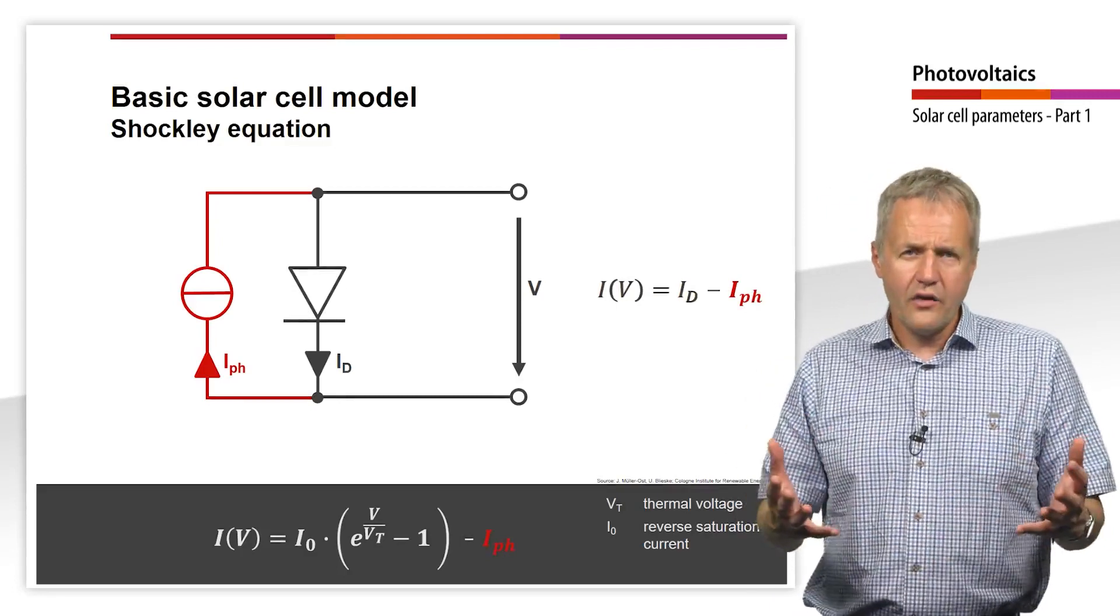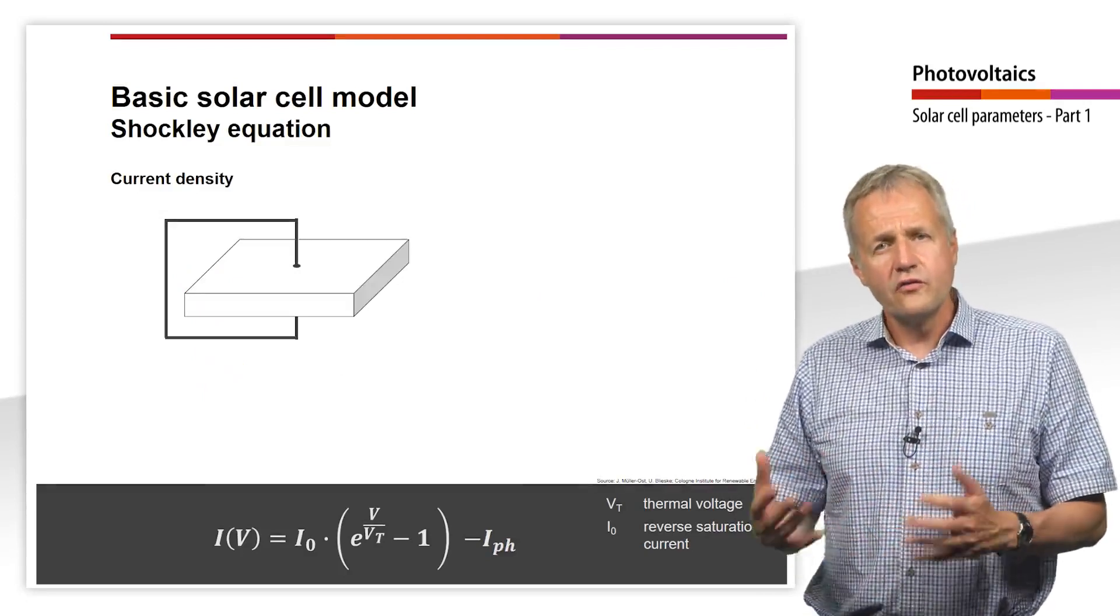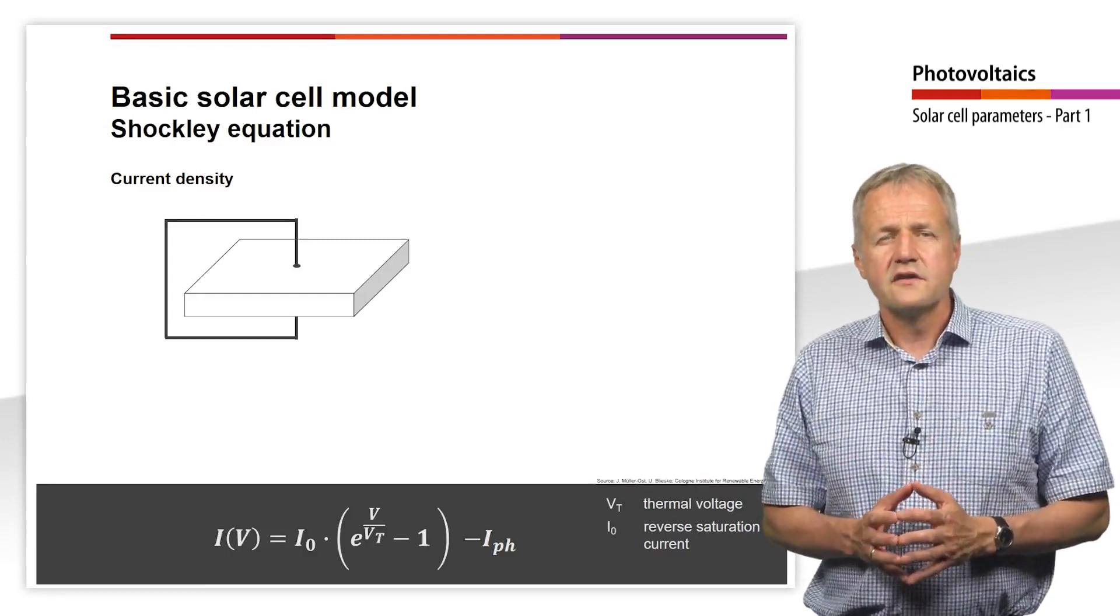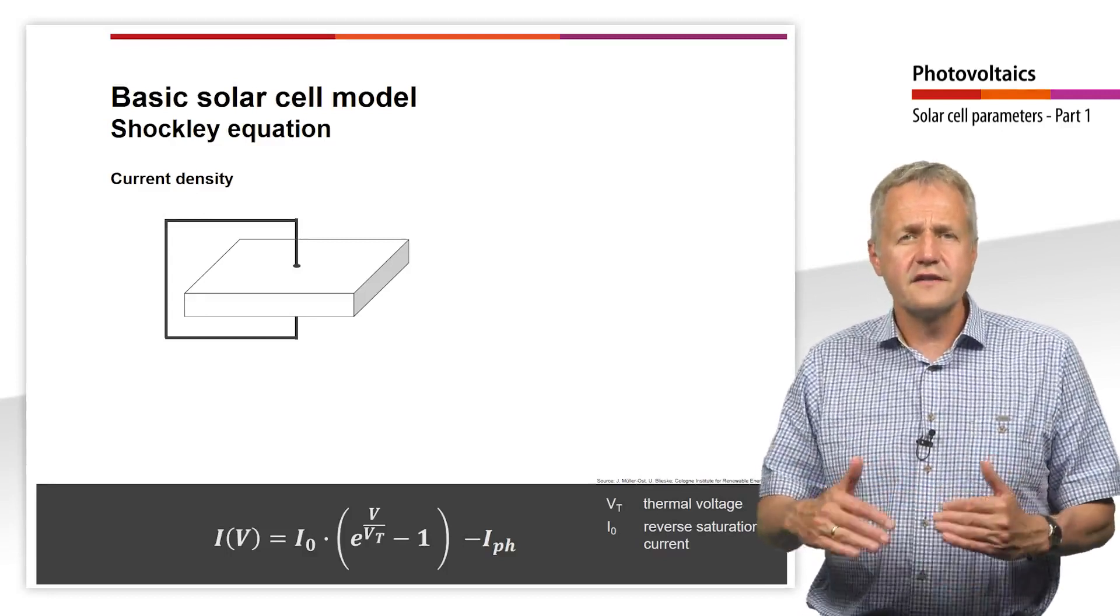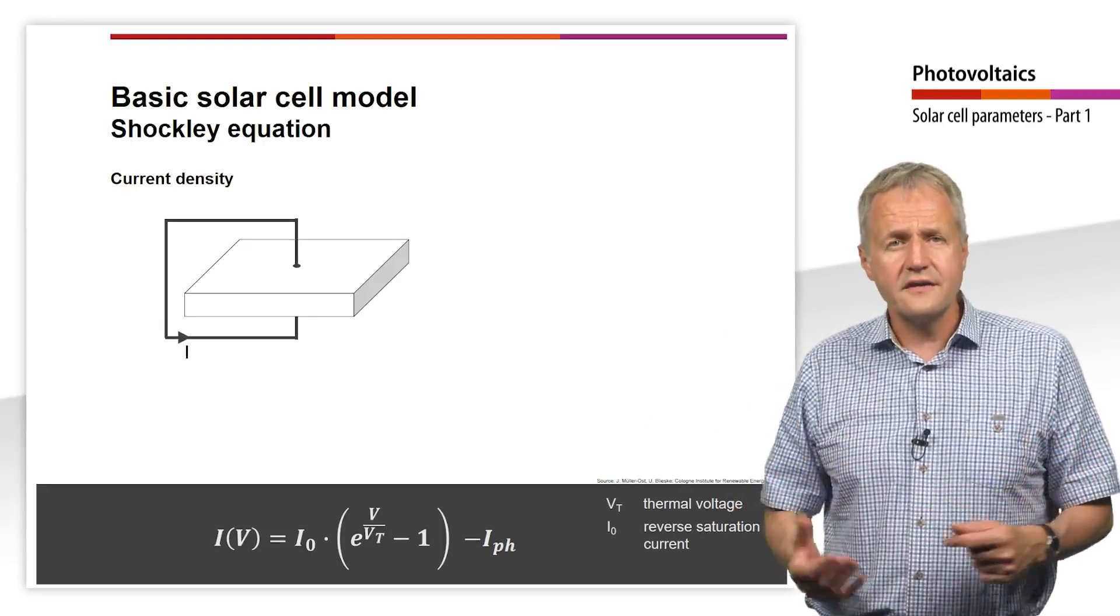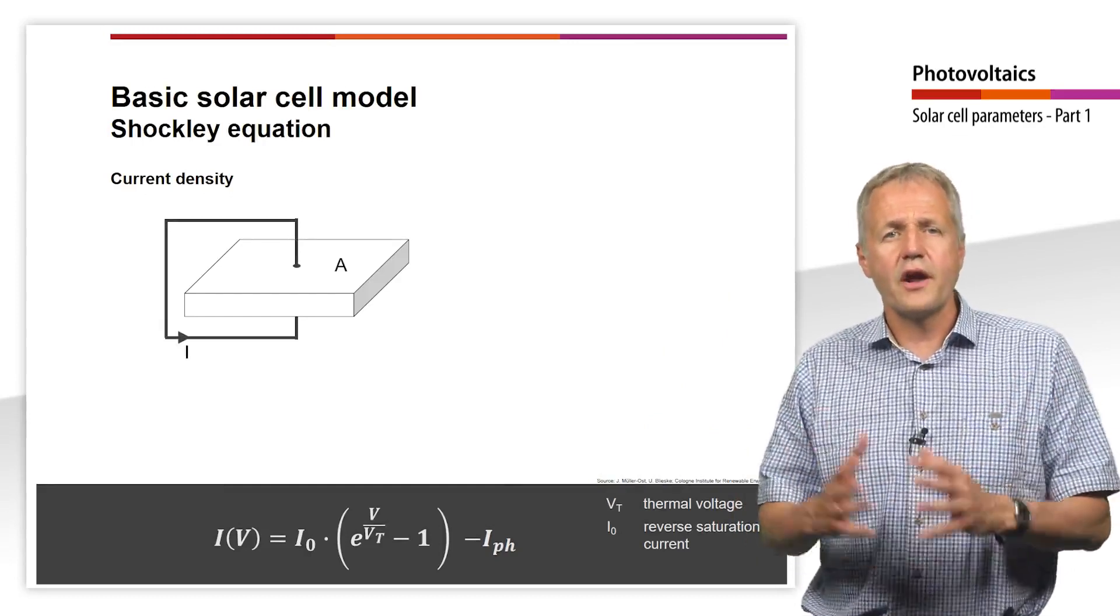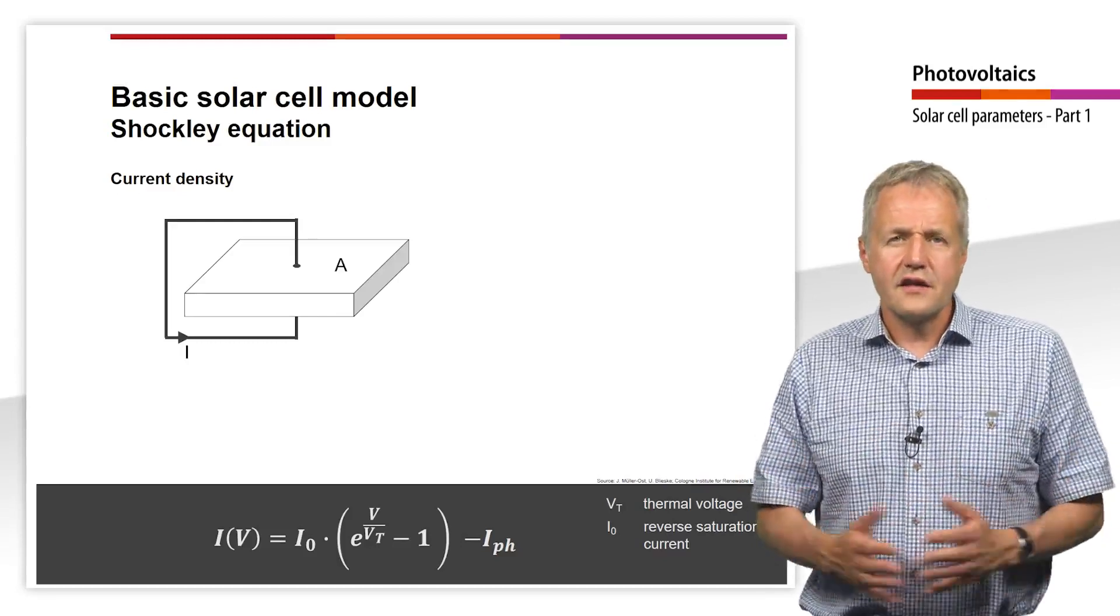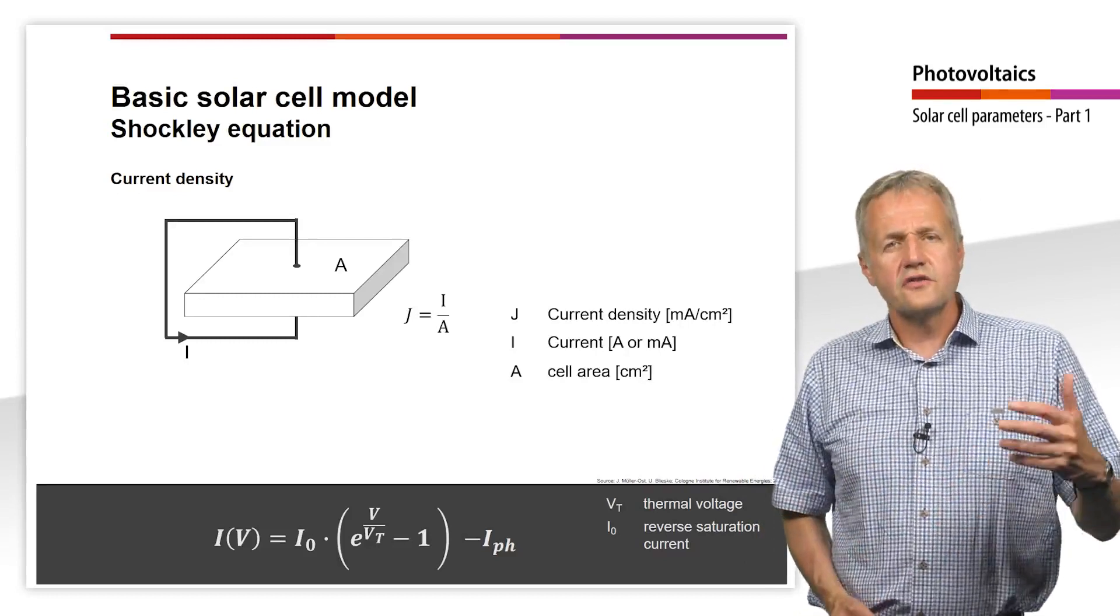So far we have considered currents. However, in this module we will work almost exclusively with current densities. The reason for this is that the current delivered by a solar cell increases proportionally with its area. Therefore, the current density is a much better measure to compare different types of solar cells with different areas. We can easily apply the equation for the current voltage dependence of a solar cell to the current densities.